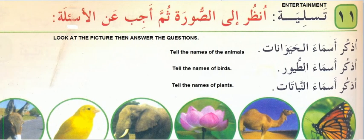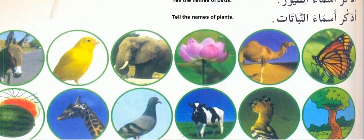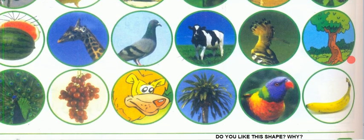Now this is our entertainment exercise. 'Unzur ila al-sura' — look at the picture, then answer the questions. 'Uskur asma al-hayawanat' — write the names of the animals. 'Uskur asma al-tuyur' — write the names of the birds. 'Uskur asma al-nabat' — write the names of the plants; 'nabatat' means plants. All the names you already know from what we have learned.